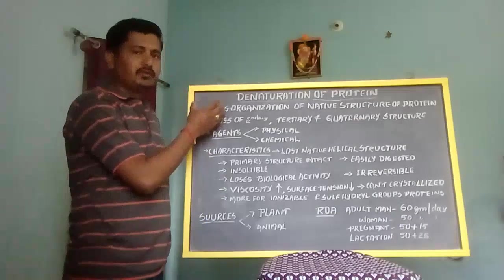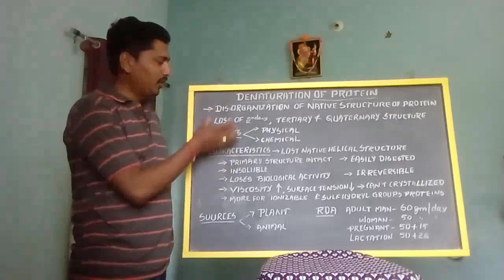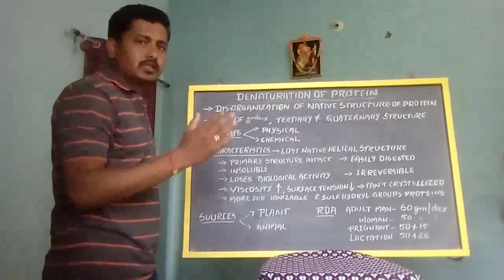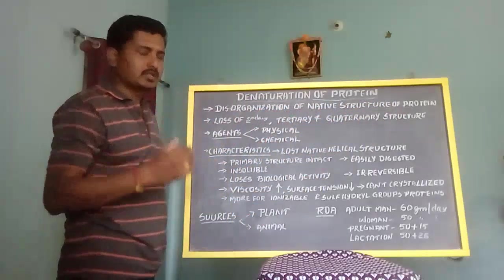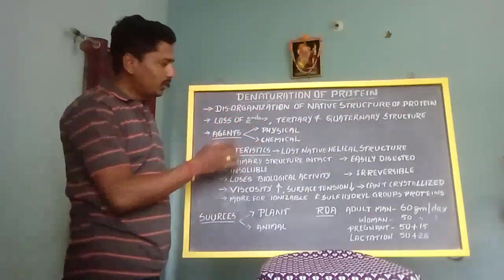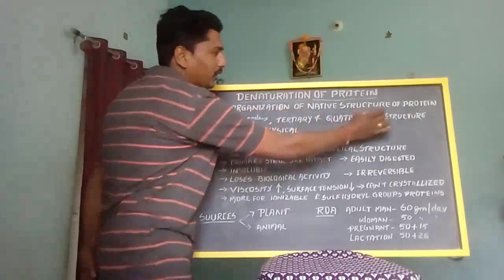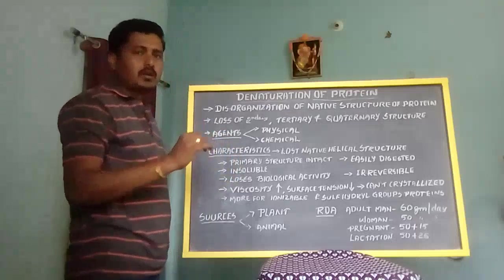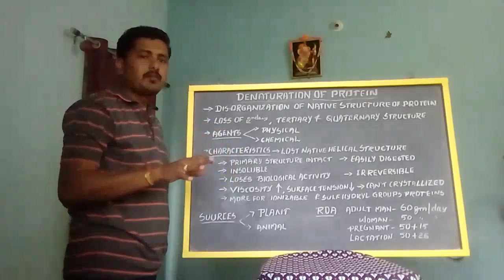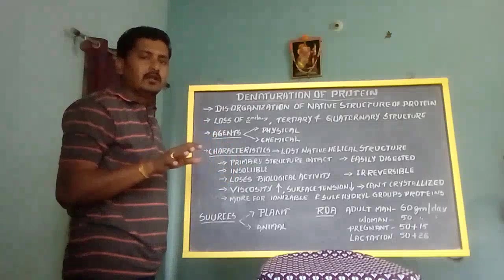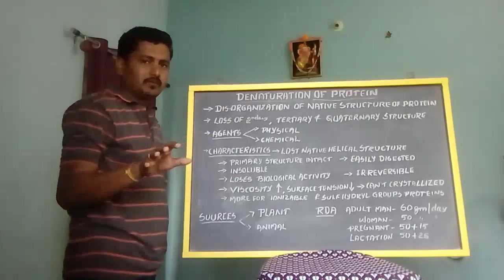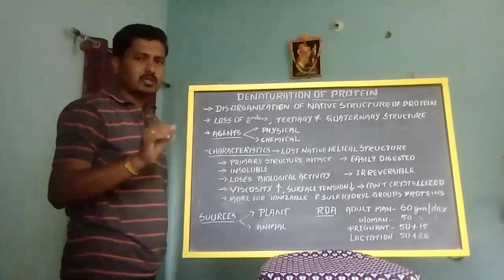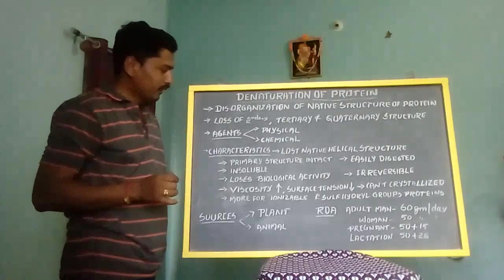Denaturation of protein is a phenomenon of disorganization of the native structure of protein. This disorganization of the native structure of protein leads to a loss of secondary, tertiary, and quaternary structure of protein. By this process, the protein loses its chemical, biological, and functional activity. This total process is called the denaturation process.